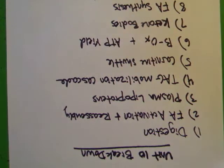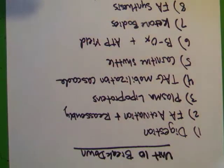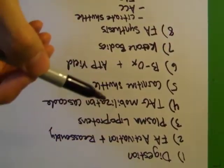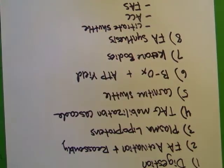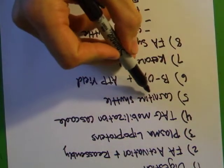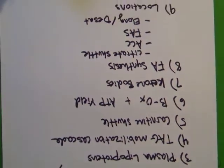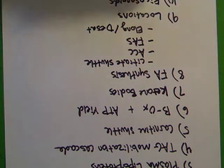Unit 10, Lipid Metabolism. This is a huge unit — the biggest one we're going to do — so I suggest breaking it down into the following pieces. Digestion should be a review. A couple of topics are really short, like the carnitine shuttle. There's also a lot of information in this unit that won't be tested over. Like always, I'm going to stick to what's going to be tested.